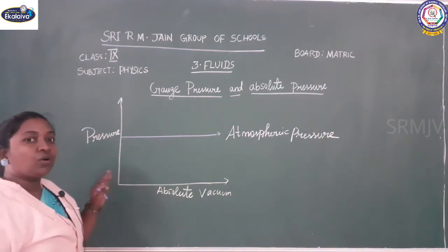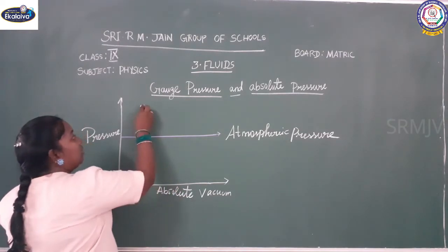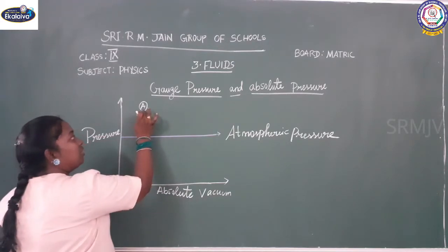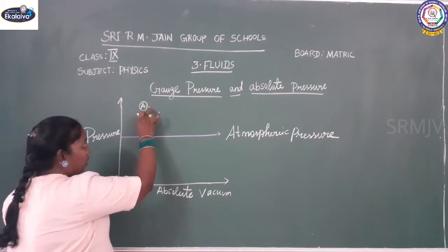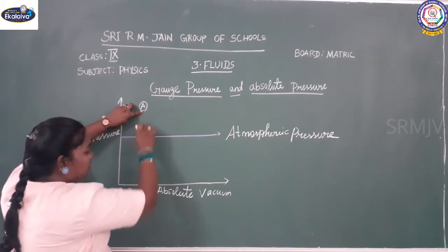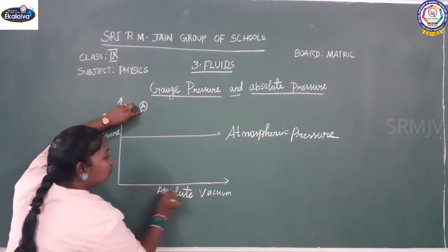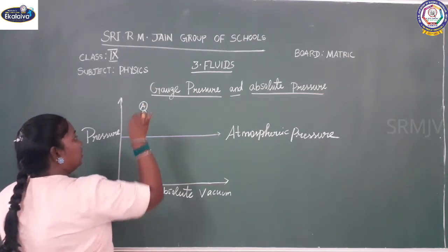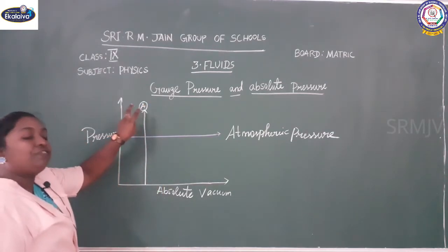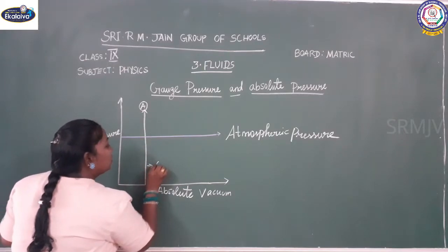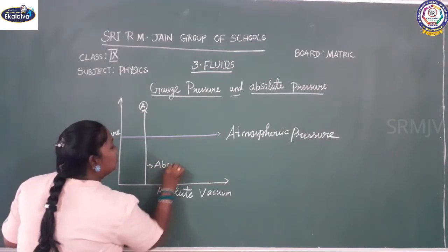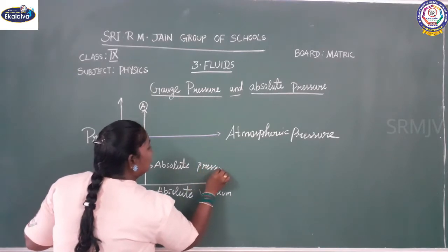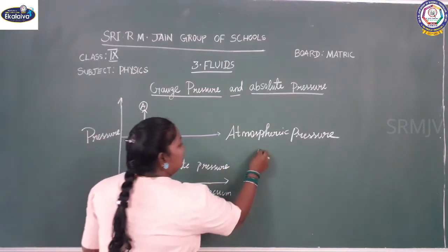With this we are going to find what is gauge pressure and what is absolute pressure. If I take a point A over here, to measure this I have to measure from absolute vacuum, above the atmospheric pressure. This marking or reading will give us what is absolute pressure.